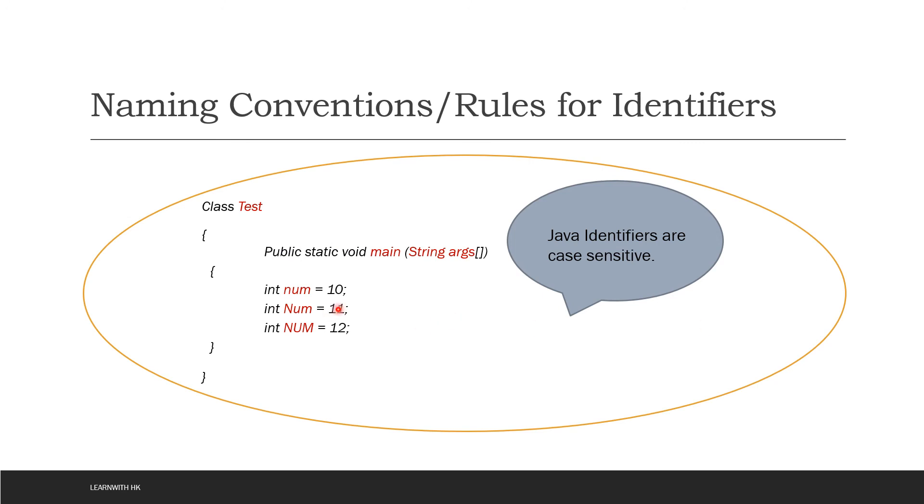If you are writing your identifier name with case sensitivity, like all small, then first letter capital, and then all capitals, it is allowed because Java identifiers are case sensitive, or we can say altogether Java language is a case sensitive language. So this is perfectly fine and it is not going to give any error to you.